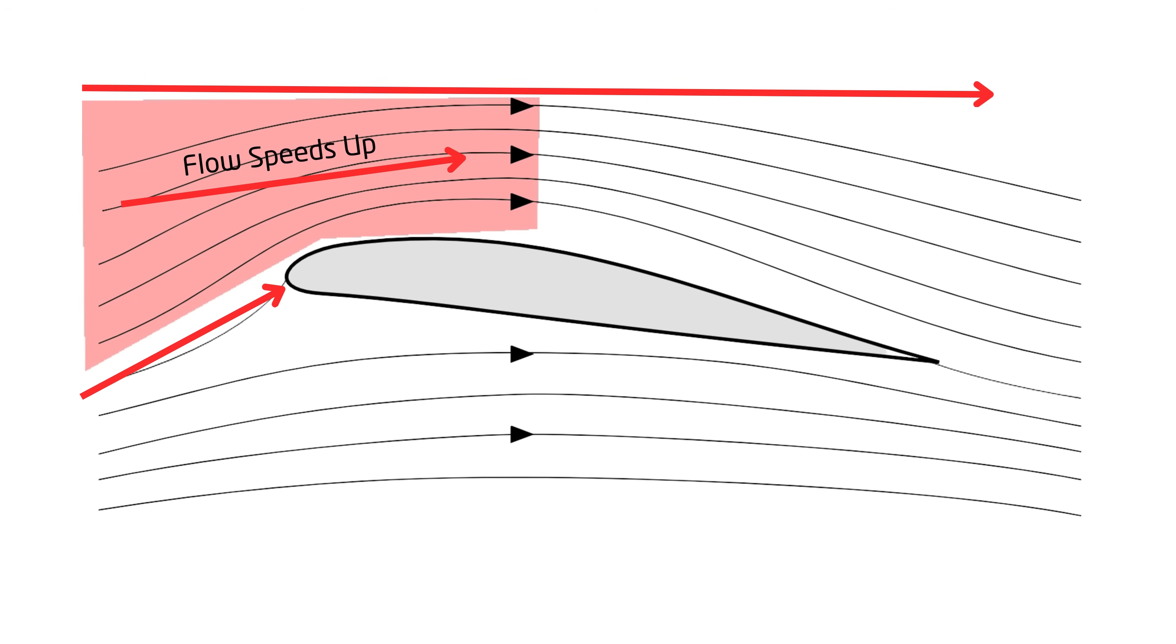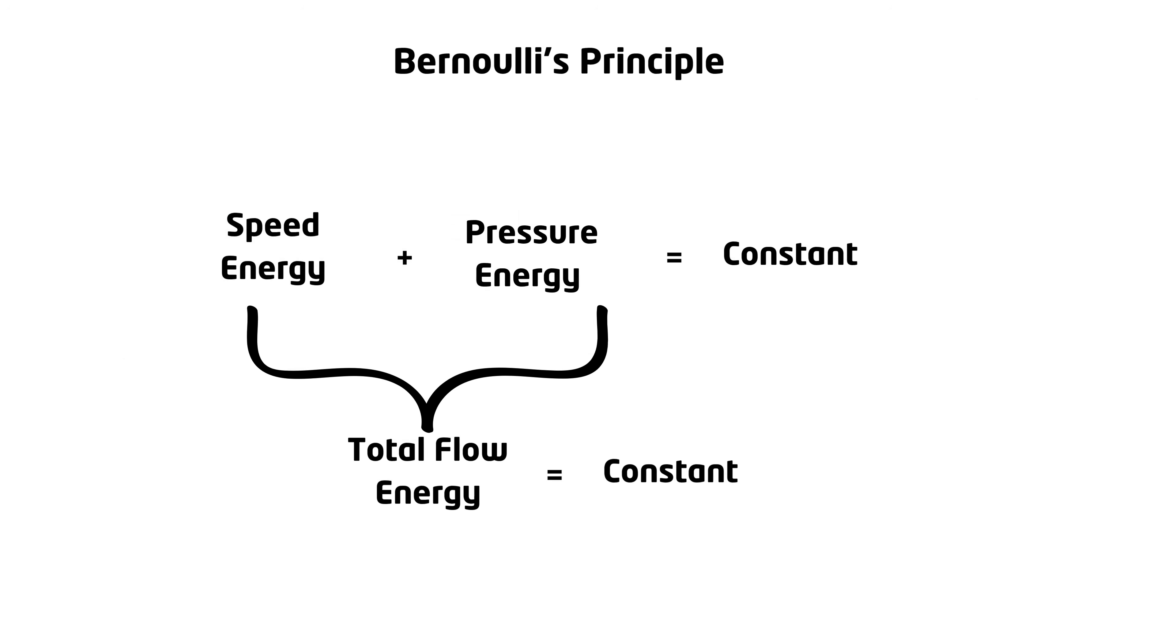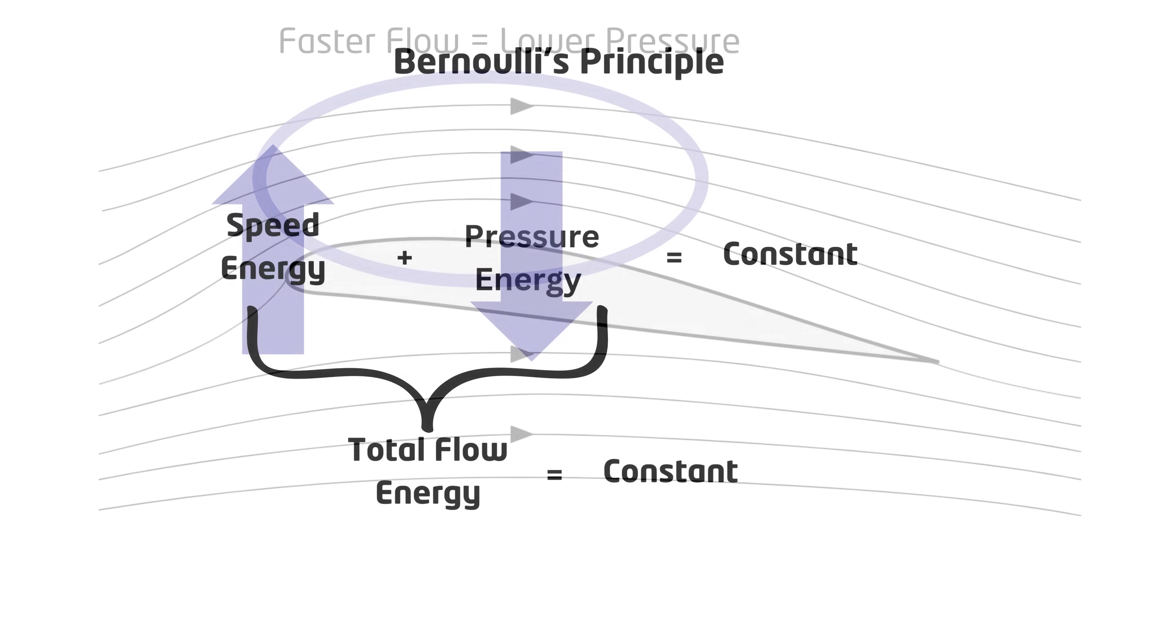Bernoulli's principle states that, assuming viscosity and gravity effects are negligible, the total energy of flow stays constant along the streamline. The total energy is composed of the energy contained in the fluid's speed and the energy contained in its pressure. Therefore, if the flow speeds up, the pressure must go down. This means that the pressure above the airfoil is reduced as it speeds up.